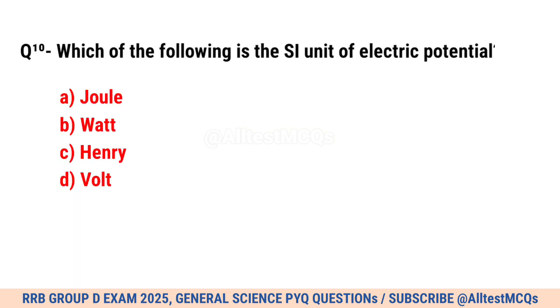Question No. 10. Which of the following is the SI unit of electric potential? Correct option is D. Volt.